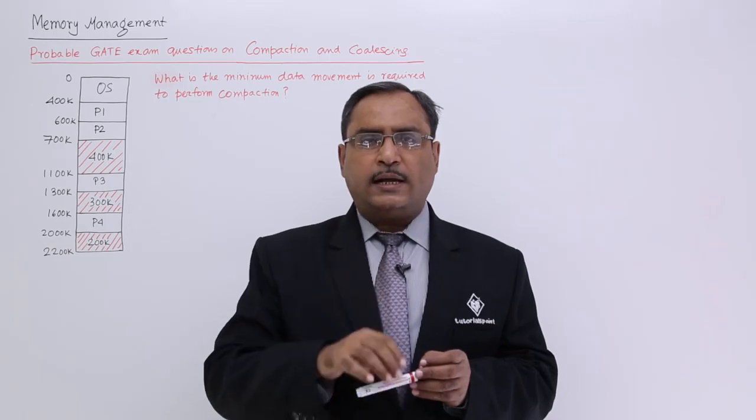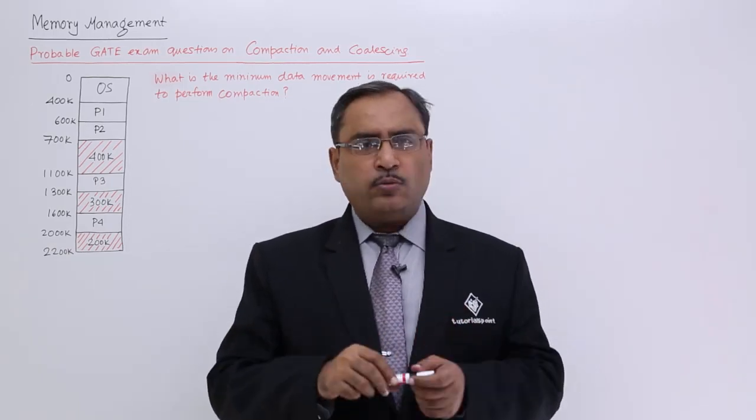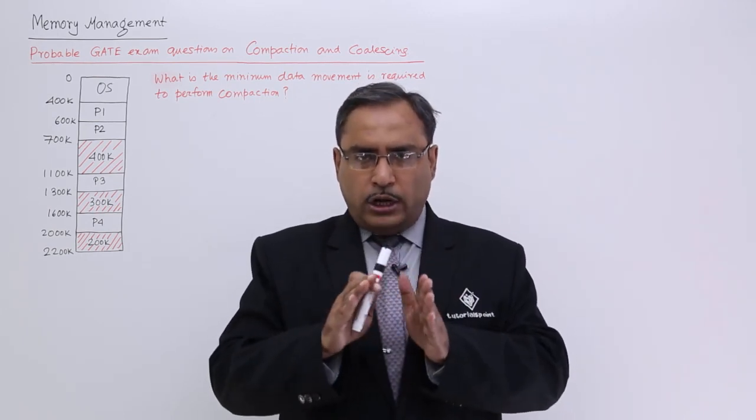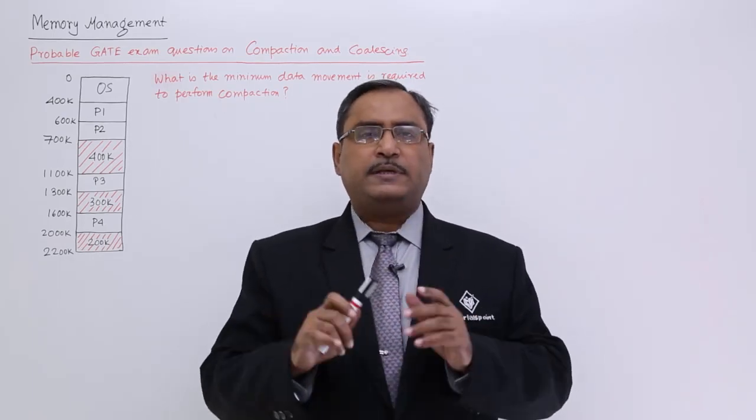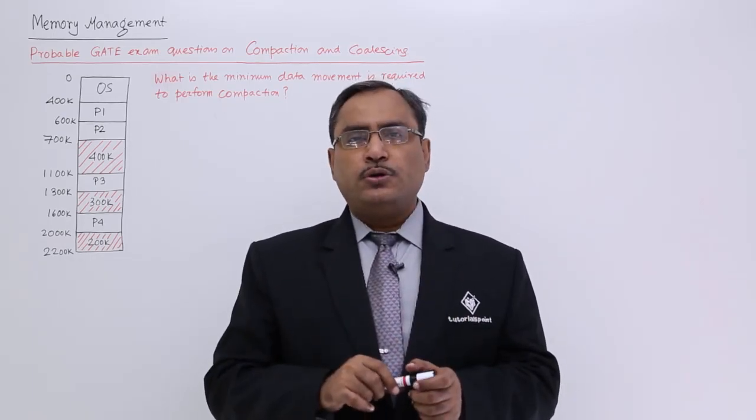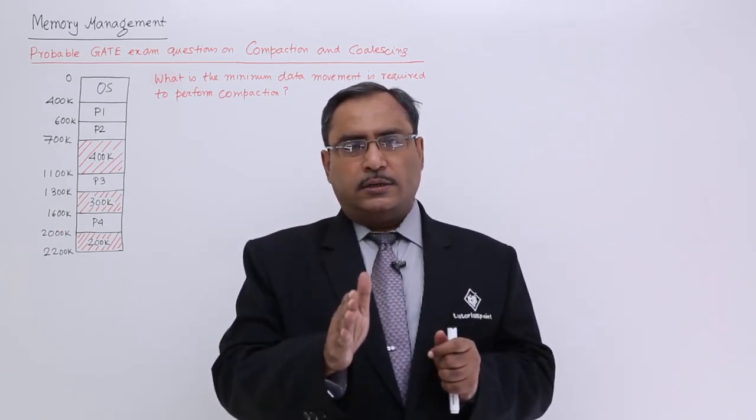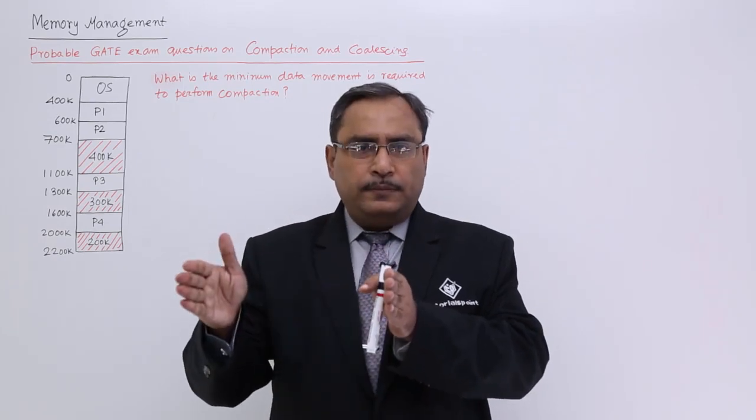Let us suppose, one process has come whose size is 1000 KB. So, can we allocate that one there? No, because the process requires a contiguous free space. If you go for single partition allocation, it requires a contiguous free space. Then what we shall have to do? We shall have to shift all the processes in such a way that the full memory space will be available at a stretch.